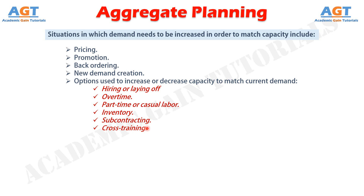Cross-training — cross-trained employees may be able to perform tasks in several operations, creating some flexibility when scheduling capacity. Other methods — while varying workforce size and utilization, inventory build-up or backlogging, and subcontracting are well-known alternatives, there are other, more novel ways that find use in industry. Among these options are sharing employees with counter-cyclical companies and attempting to find interesting and meaningful projects for employees to do during slack times.